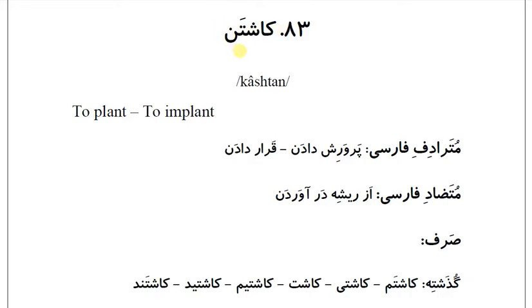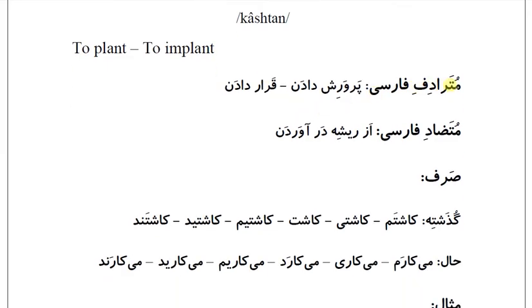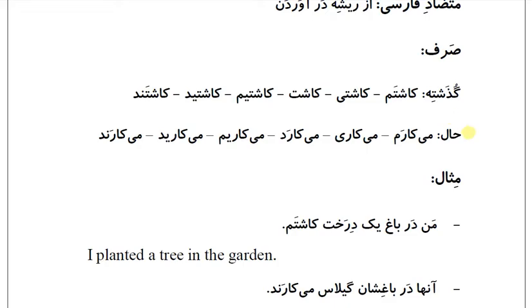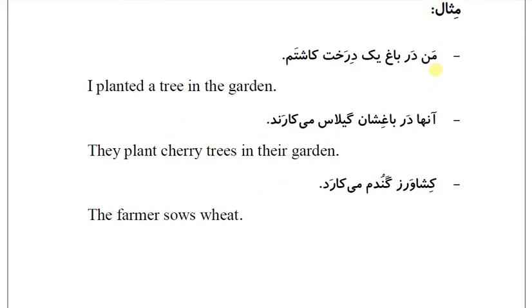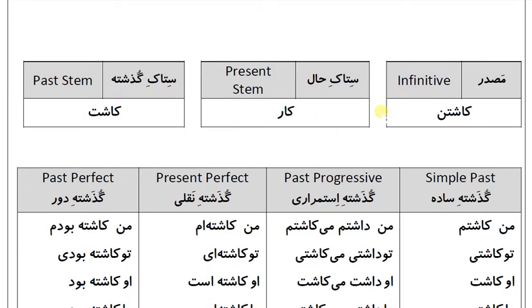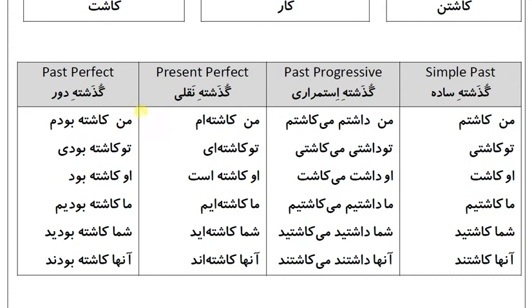You can see the English meaning of the verb here. The verb is کاشتن (to plant/sow). The present stem is کار and the past stem is کاشت.